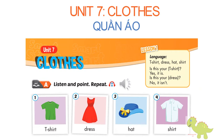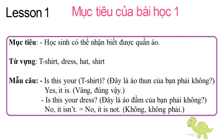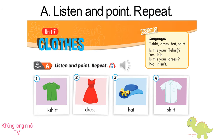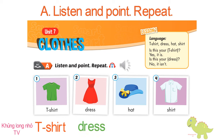Unit 7. Lesson 1. A. Listen and point, repeat. 1. T-shirt. 2. Dress. 3. Hat. 4. Shirt.